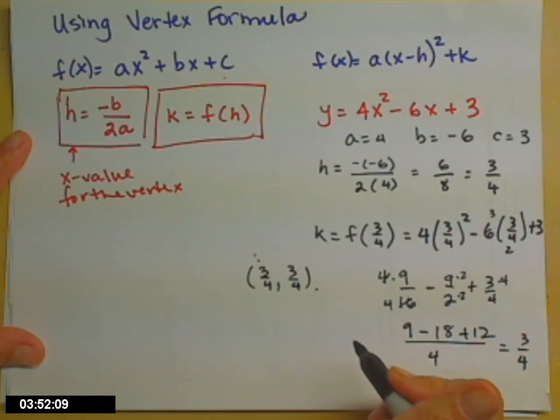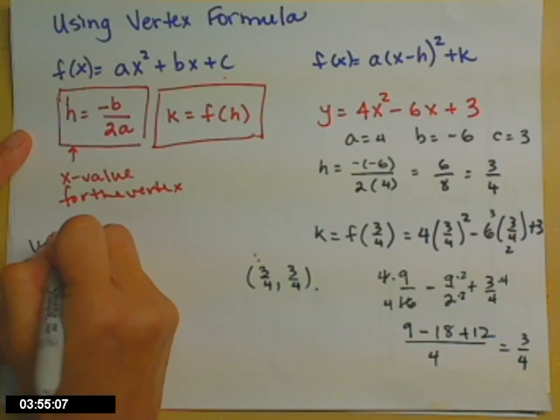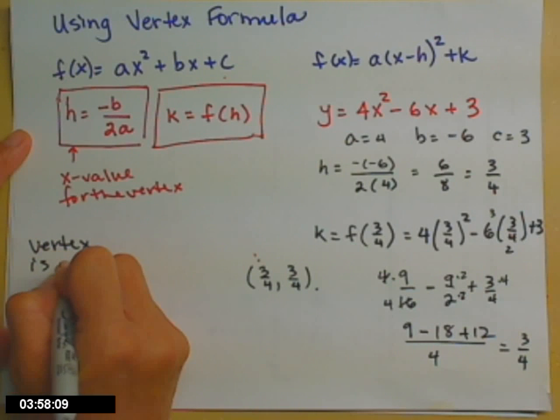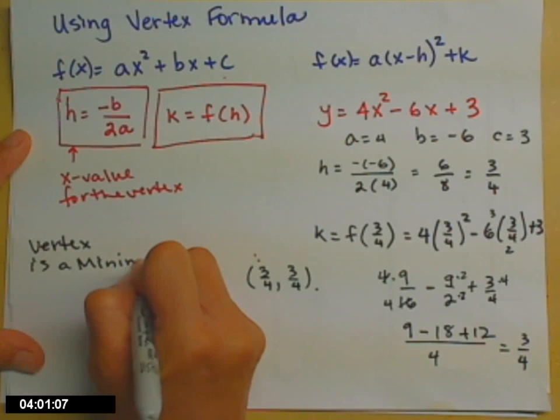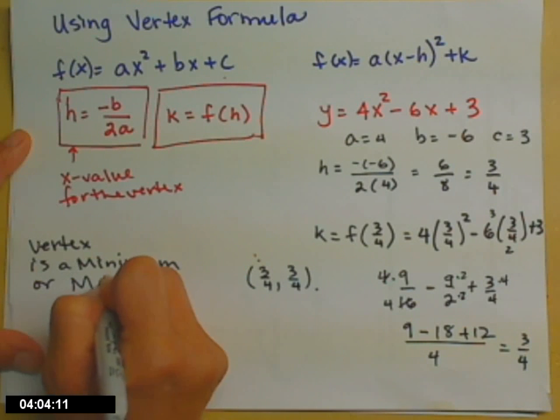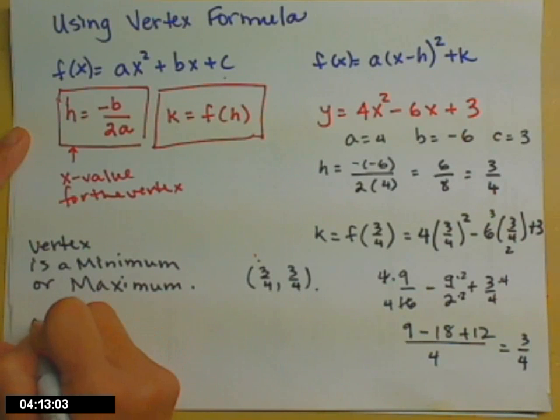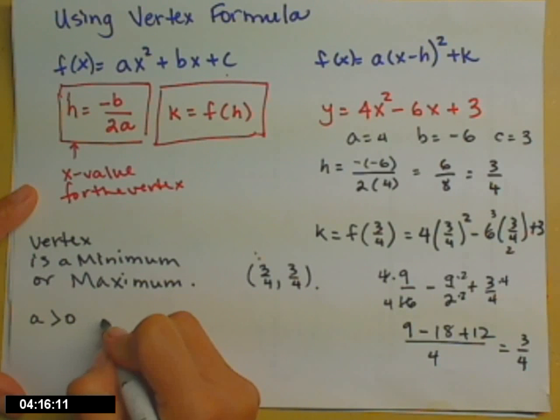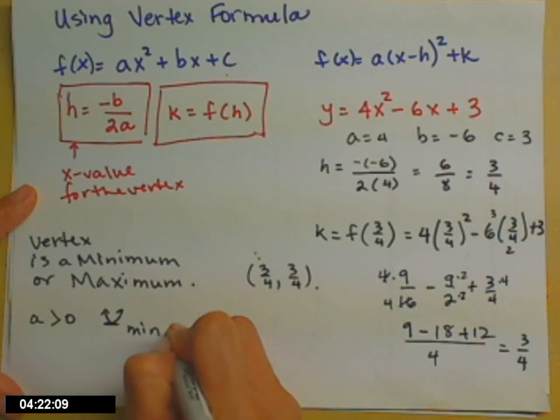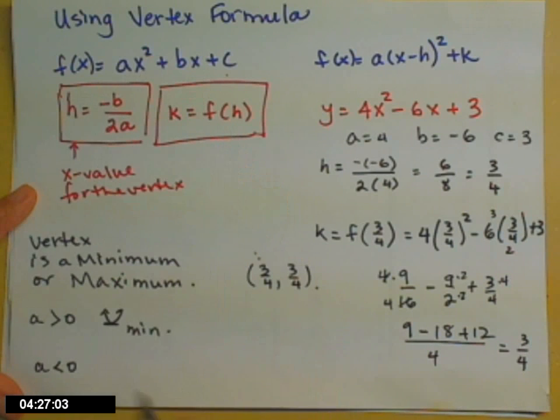Now, something you'll be asked is, is that a minimum or a maximum? The vertex is always a minimum or a maximum of the function. And you decide if it's a minimum or a maximum depending on which way the vertex opens. And the letter a decides which way it opens. So, if a is positive, the parabola opens up. And so, the vertex would be a minimum. If a is less than 0, if a is negative, a negative x squared, those parabolas open down. And that means your vertex would be a maximum, a highest value.